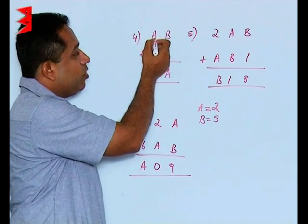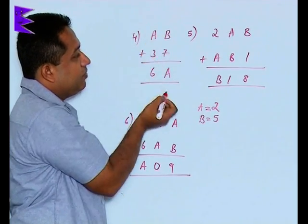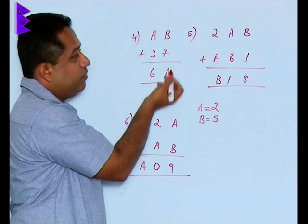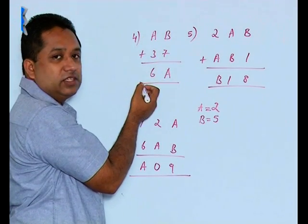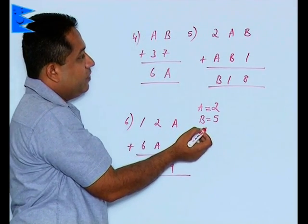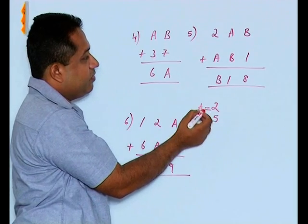It cannot be 3 because if I'm taking 3 here, then this also has to be 3, which means this is 6. 6 and 7 is 13. That means there will be 1 carried over. Again, the answer will not come. So we have the value of B as 5 and the value of A as 2.